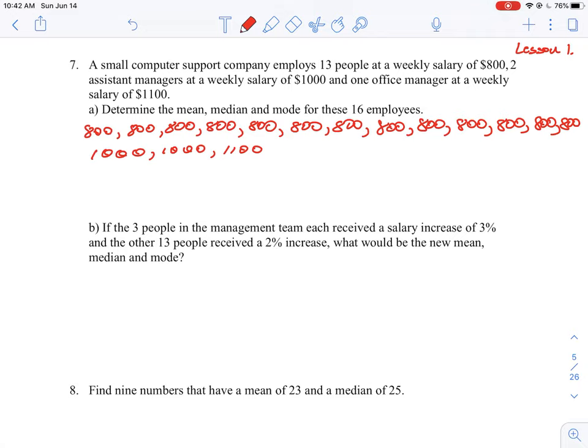So 1, 2, 3, 4, 5, 6, 7, 8. So this 800 here would be the median. That means 50% of the values are below 800 or less, and 50% are 800 or more. And the mode is the most common element there, which is 800.